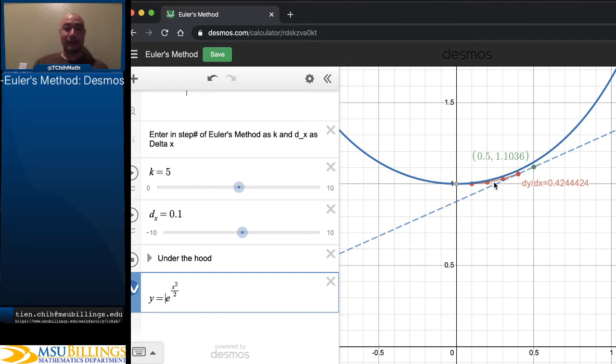Now, if we want it to be a lot more accurate, we could do so by using much smaller delta x. But this is more of a proof of concept rather than a serious execution of Euler's method, which I would recommend using some computer algebra system like Sage or R or Python or Mathematica for it.